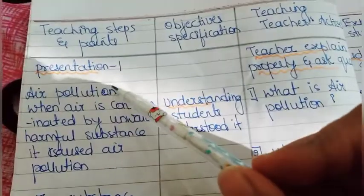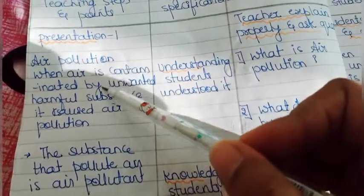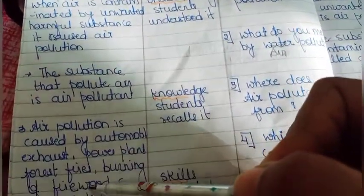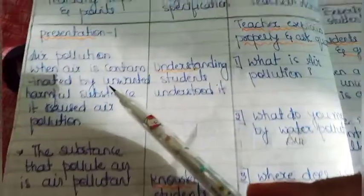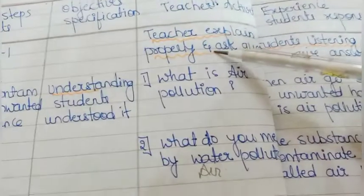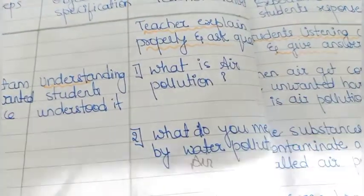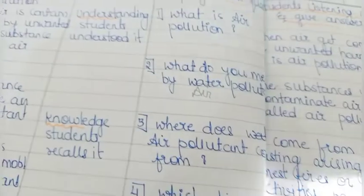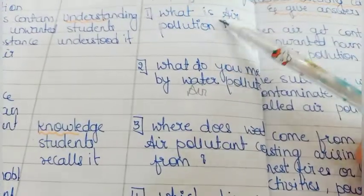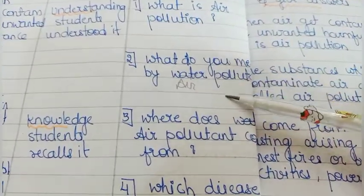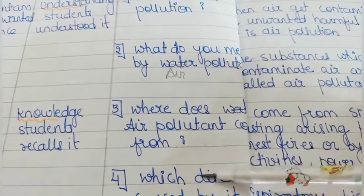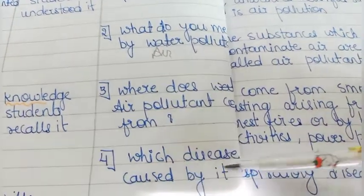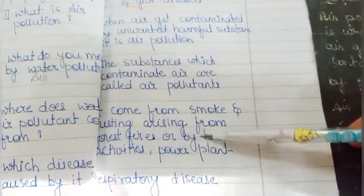Now here in Presentation 1, you can see all the content we have to teach to students. After explaining the content properly, we have to ask questions related to that. I have added four questions: what is air pollution, what do you mean by air pollution, where does an air pollutant come from, and which diseases are caused by it. Here is the expected answer that we expect from students.